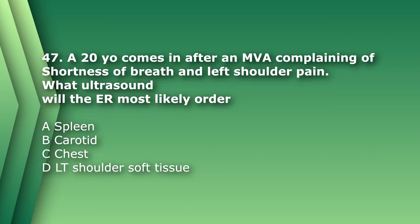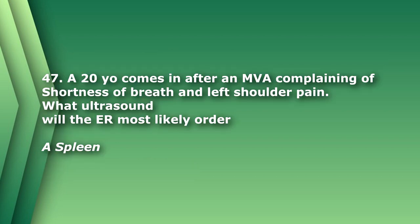Number 47. A 20-year-old comes in after an MVA complaining of shortness of breath and left shoulder pain. What ultrasound will the ER most likely order? A. Spleen. B. Carotid. C. Chest. D. Left shoulder soft tissue. The most likely order is A, spleen. The spleen is commonly injured in motor vehicle accidents and can cause irritation of the diaphragm, which refers pain up into the left shoulder.